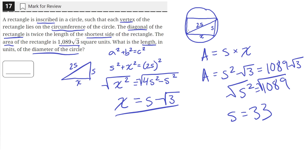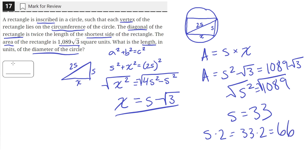And that also gives us the length of this diagonal. Because we know that the diagonal of this rectangle is equal to 2 times the length of the shortest side — in this case s. So we multiply s by 2: that's 33 times 2, which equals 66. So the diameter of the circle is 66, which is just the diagonal of this rectangle.